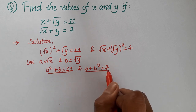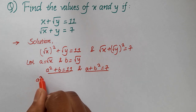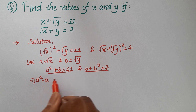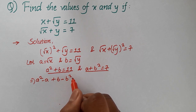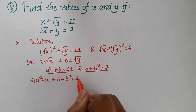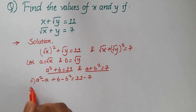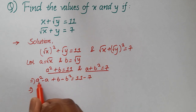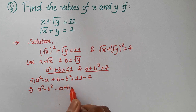So now if we subtract these two equations, then we will have a squared minus a plus b minus b squared is equal to 11 minus 7. Now let us bring a squared and b squared together — then we will have a squared minus b squared minus a plus b equal to 4.